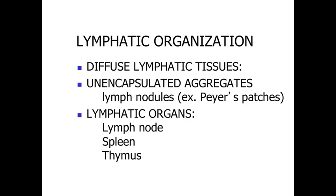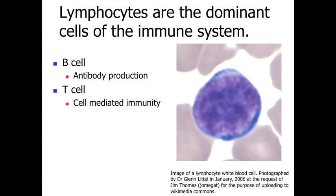Finally, we're going to have some lymphatic organs — some distinct structures, both anatomically and physiologically, for specific regions of the body and specific protective mechanisms. These are going to be the lymph node, the spleen, and the thymus.